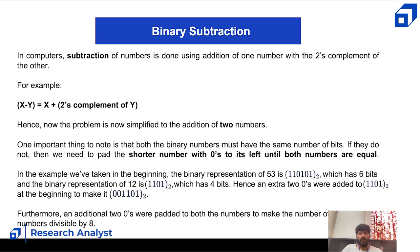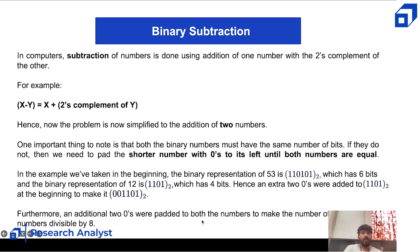For example, the binary representation of 53 is 110101, which has six bits, while 12 is 1101, which has only four bits. So you add two zeros to make it 001101. Furthermore, two more zeros are added to both numbers so that the total number of bits is divisible by eight, giving an eight-bit representation, which is much easier to work with.